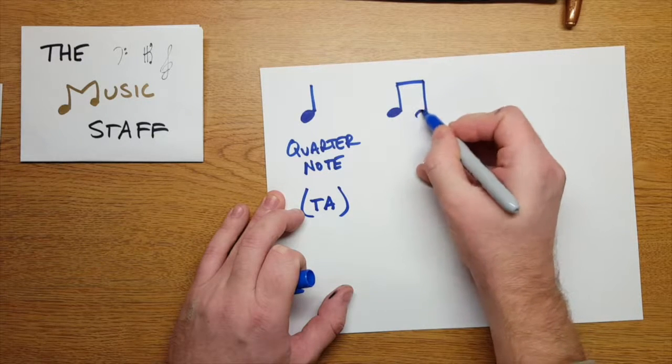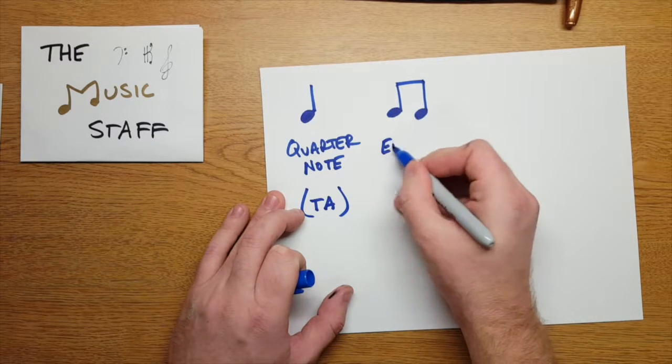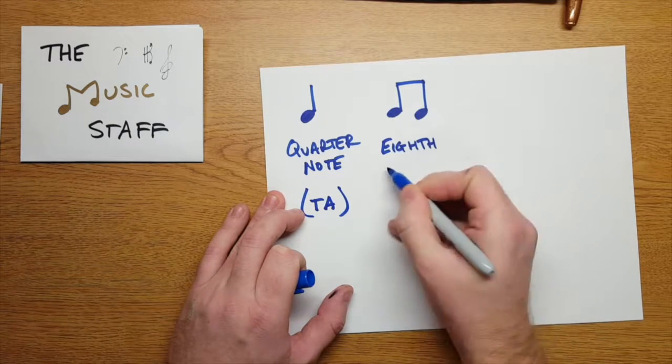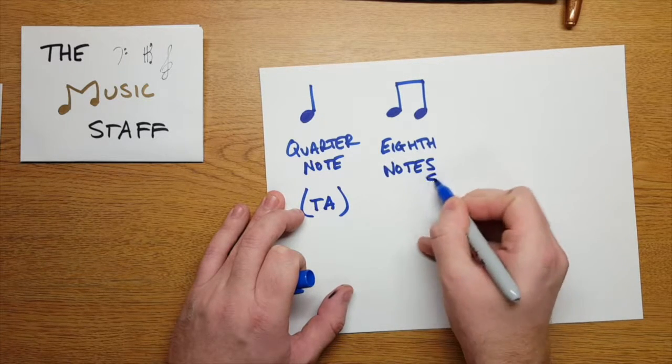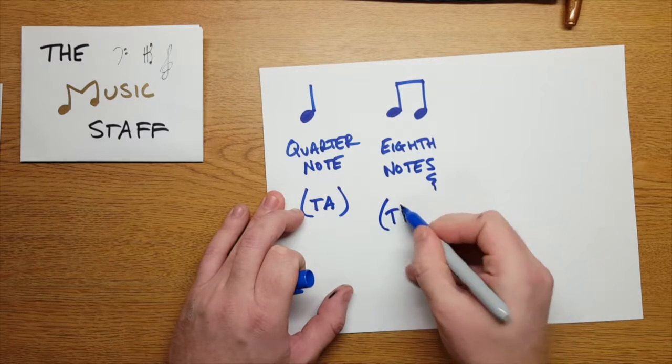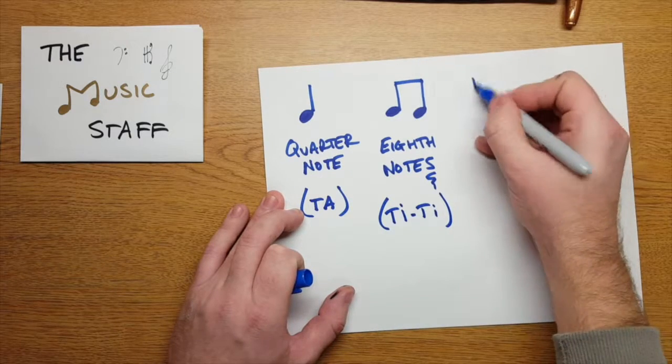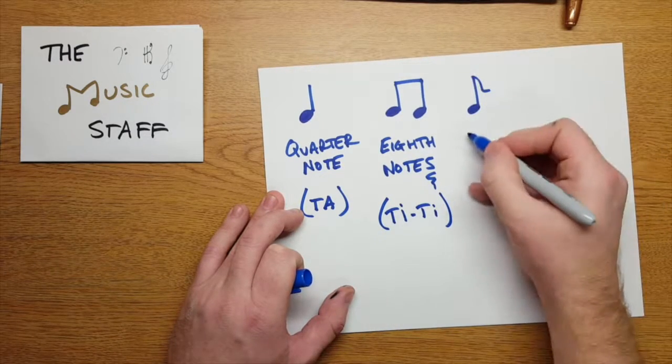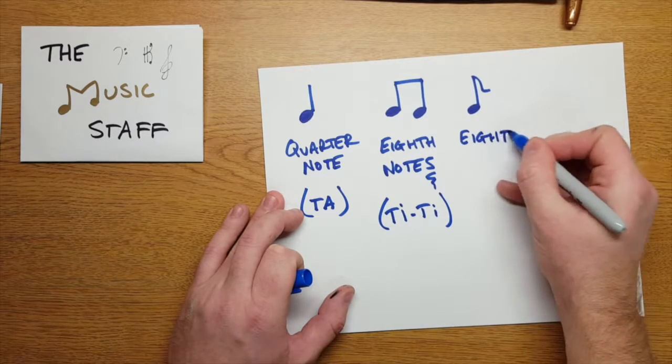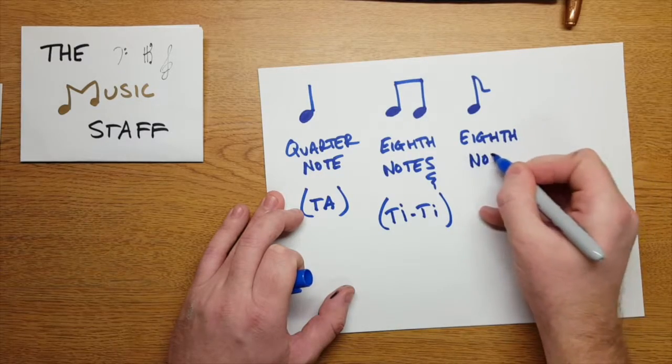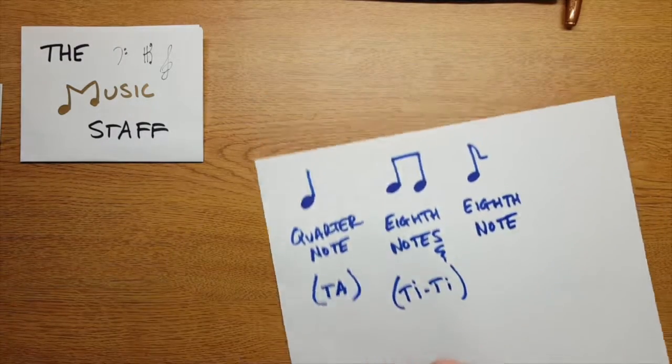Next we have eighth notes. These two are beamed together. They get one beat, but you'll hear two sounds during that beat. Tee-tee. A lonely eighth note has this flag hanging down and it lasts half as long as a quarter note.